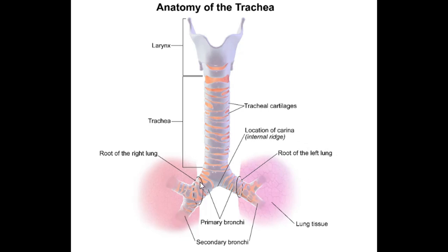Now let's talk about the bronchi. The trachea bifurcates at the carina at the sternal angle to produce the primary bronchi. The primary bronchi then branch out to give secondary bronchi. Each secondary bronchus supplies a lobe of the lung — so the right lung has three secondary bronchi and the left has two, because the right lung has three lobes and the left lung has only two lobes.